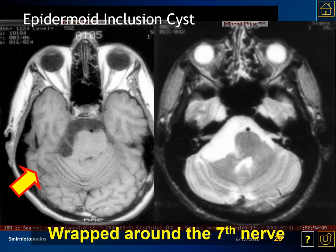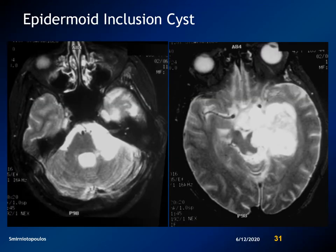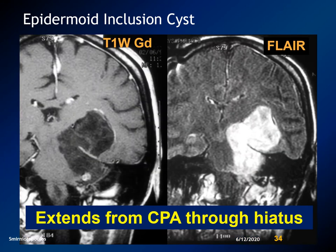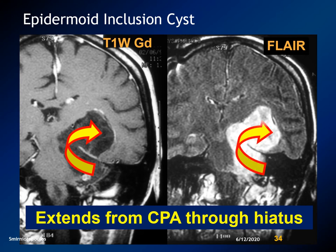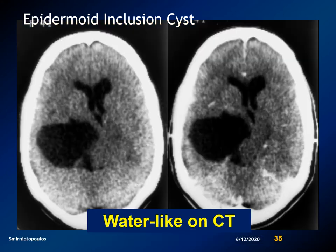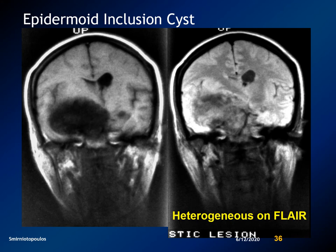Epidermoid inclusion cysts may surround the vessels and nerves in the posterior fossa. This is a classic example surrounding the seventh nerve in the cerebellopontine angle cistern. They may insinuate themselves through the tentorial hiatus and can present not only in the posterior fossa but also in the middle cranial fossa. The coronal T1 and FLAIR images illustrate the lack of contrast enhancement and show how the lesion can insinuate through the tentorial hiatus presenting in both the middle fossa and the posterior fossa. In the middle fossa on CT, they may look very water-like and be mistaken for arachnoid cysts. However, on MR with FLAIR or diffusion-weighted imaging, you can see internal structure and signal intensity that is not identical to normal CSF.